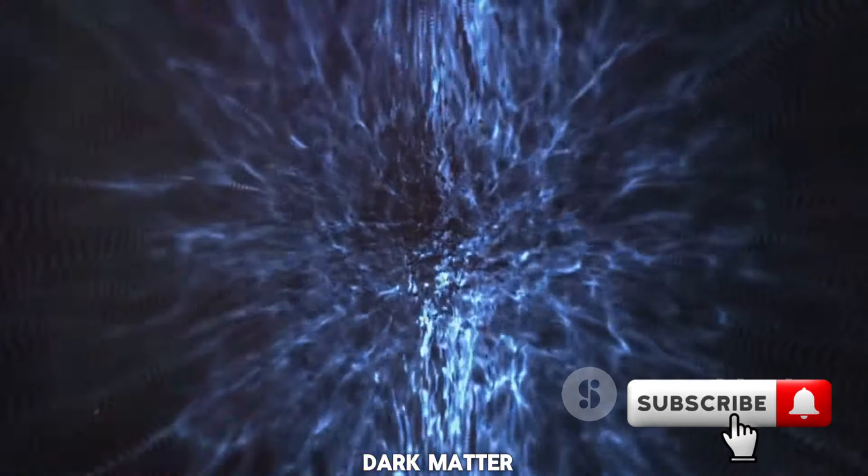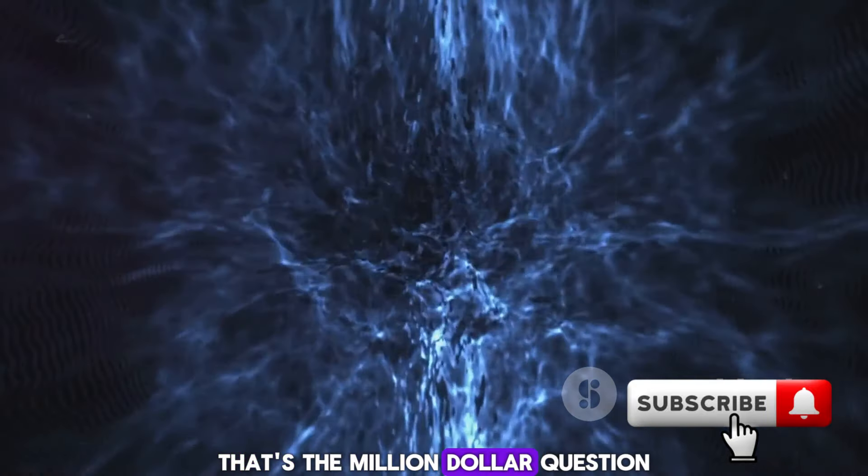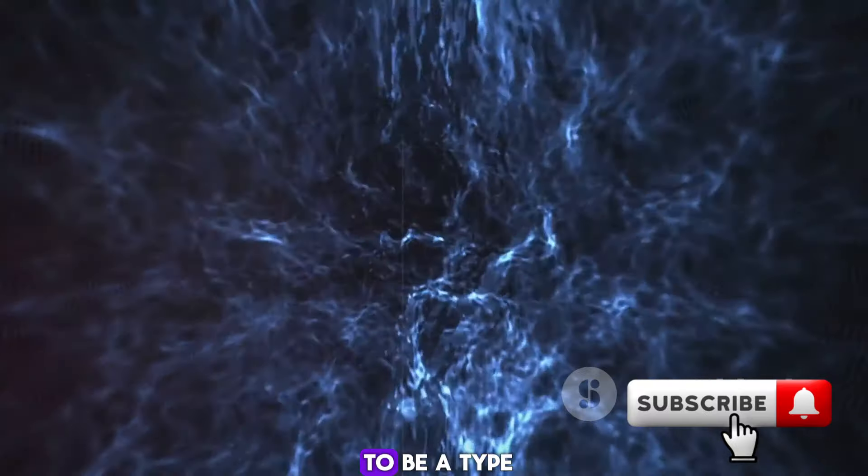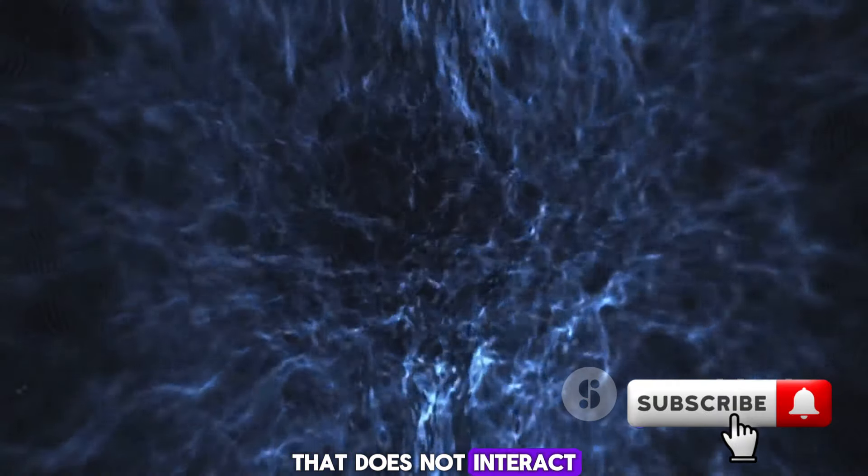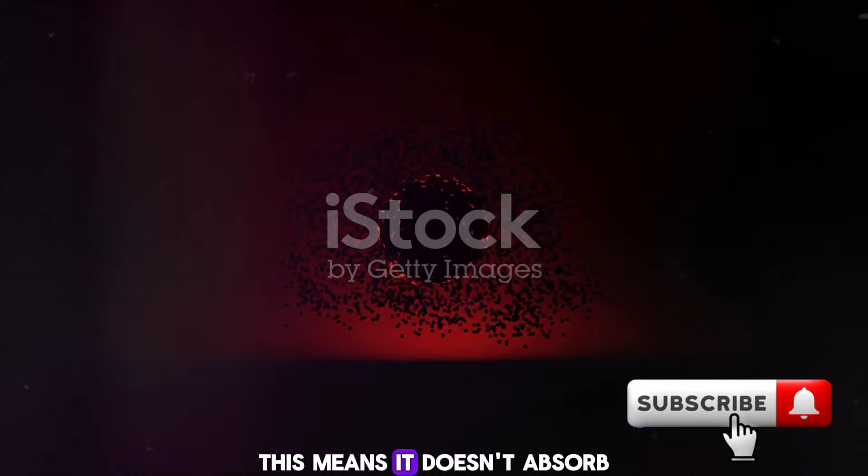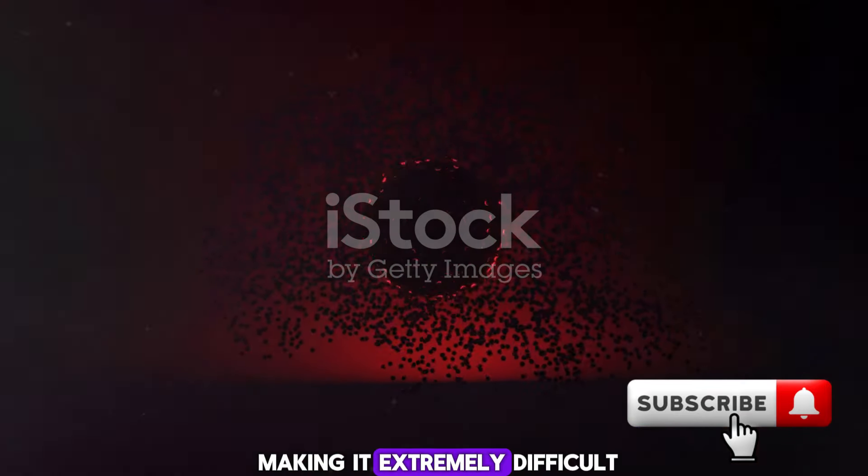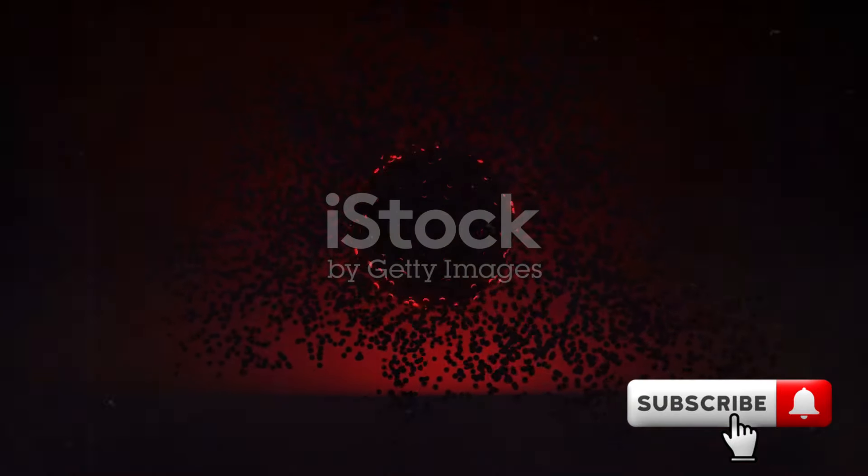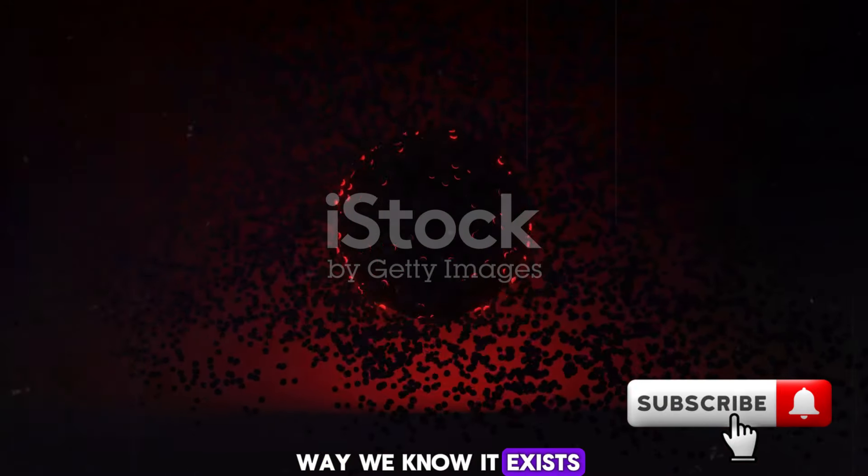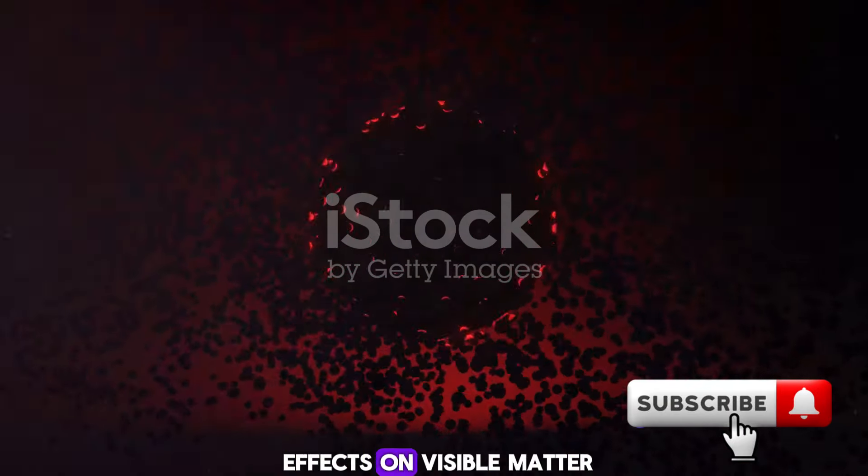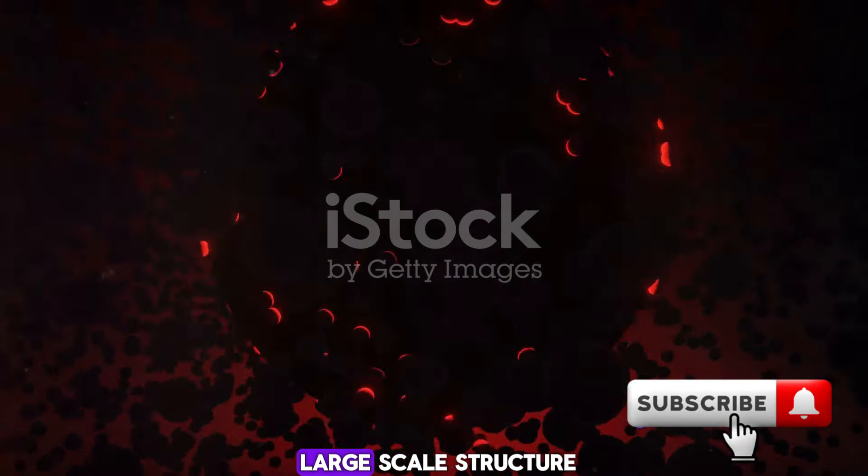But what exactly is dark matter? That's the million dollar question. Dark matter is thought to be a type of matter that does not interact with the electromagnetic force. This means it doesn't absorb, reflect, or emit light, making it extremely difficult to spot. In fact, the only way we know it exists is through its gravitational effects on visible matter, radiation, and the universe's large-scale structure.